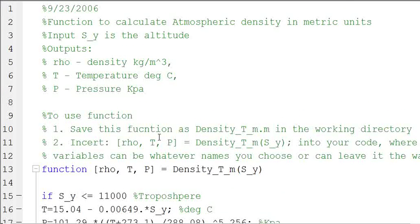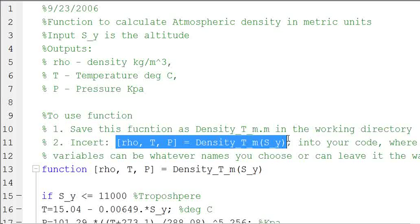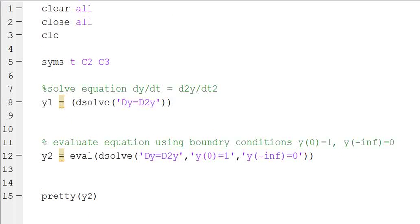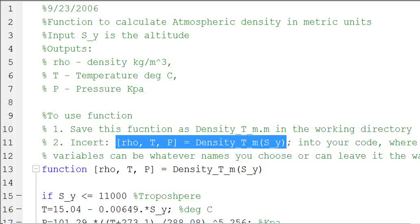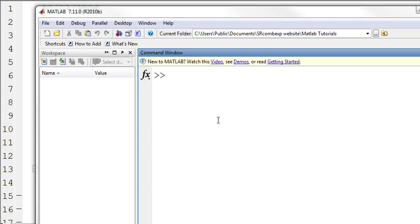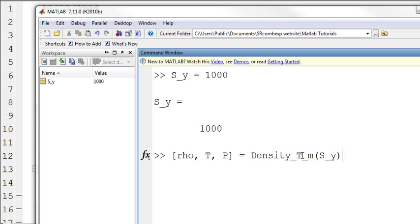So what we can do is if we copy this bit of code, I don't have this code in a script to show you how to use right now. I'm sure I have it somewhere, but I don't know where. I can go to my command window and then evaluate this. So if I say S_y is equal to 1,000, I can define that. And then I can copy my bit of function code here. This is already saved in the working directory that I'm working in right now.